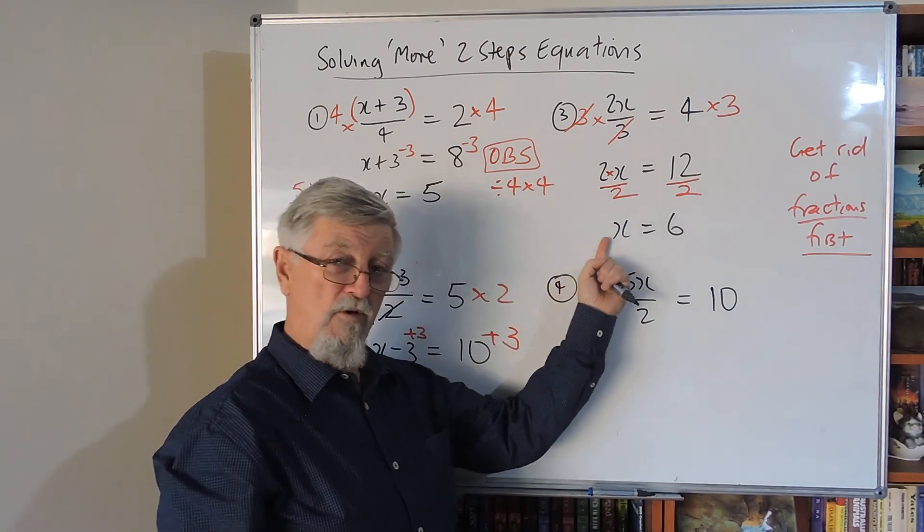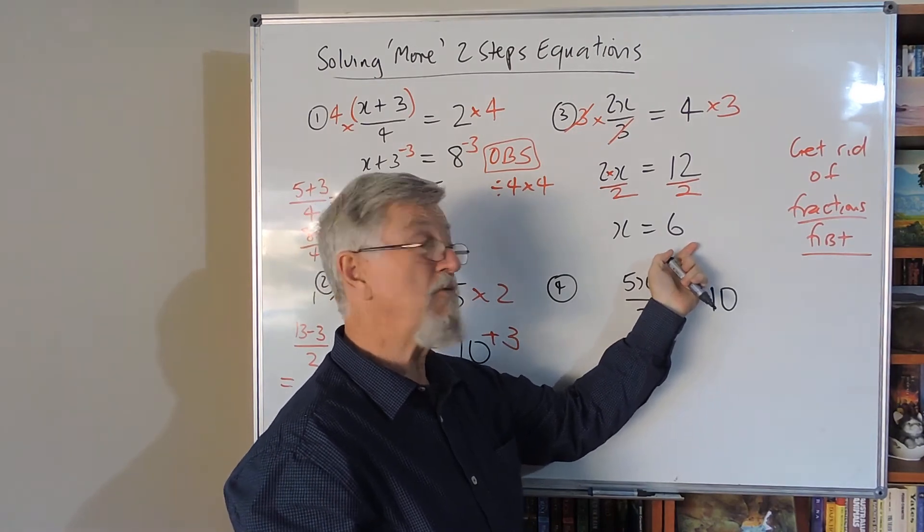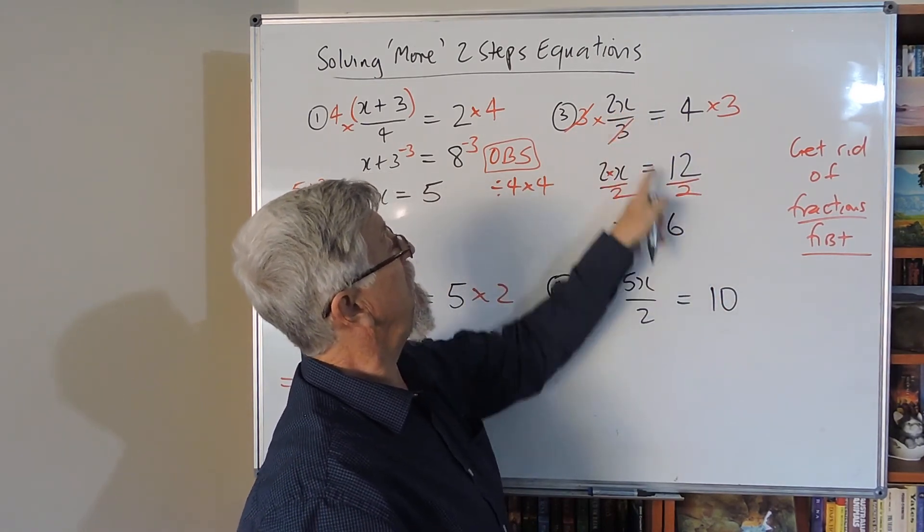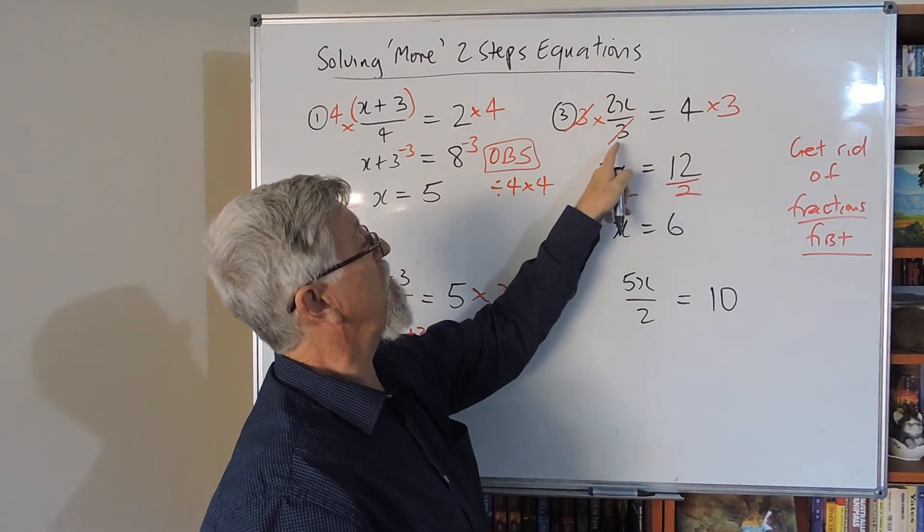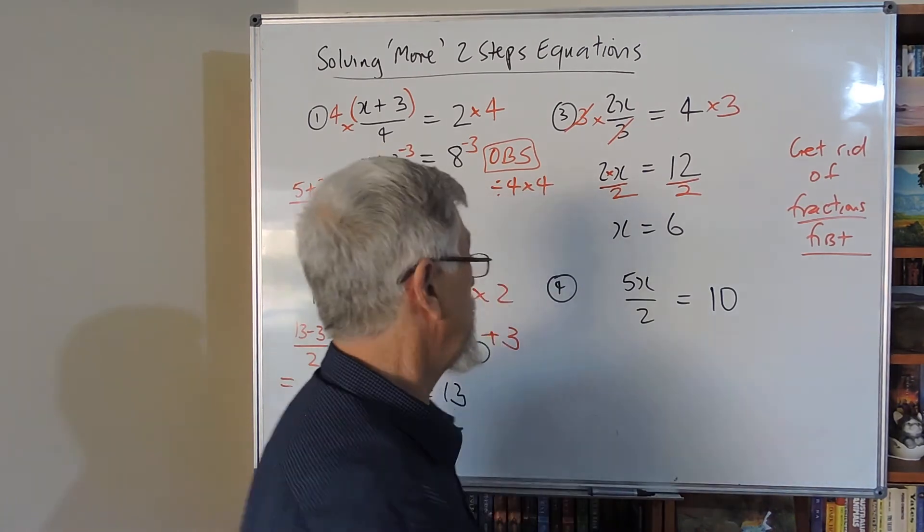So what's between the two and the x is the times. If I divide this side by two, I divide that side by two. Two into two goes once, I don't have to write it, and two into twelve goes six times. Again I could check it on the original: 2 × 6 = 12, and when I divide it by three I get the four.